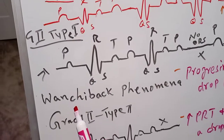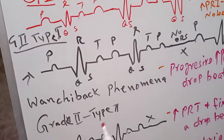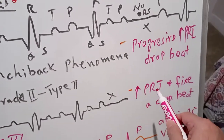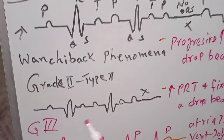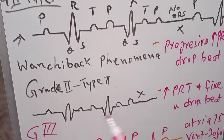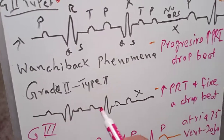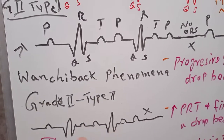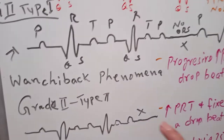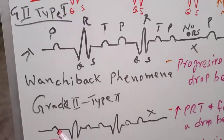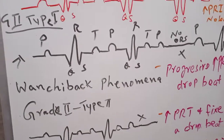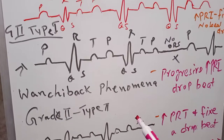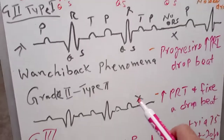Now Grade 2 Type 2. The PR interval is increased but it is fixed — not progressively increasing. If it is 6, it stays 6; if it is 7, it stays 7; if it is 9, it stays 9 — and finally one beat will be dropped. This is Grade 2 Type 2 heart block, also known as Mobitz 2.